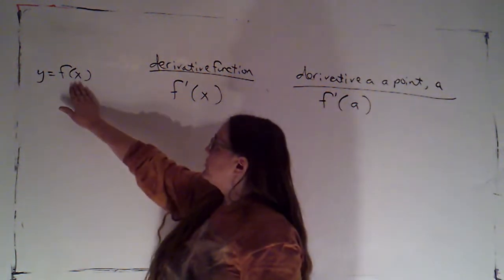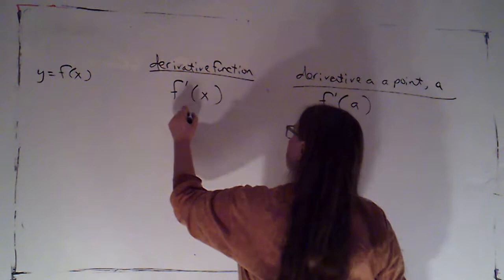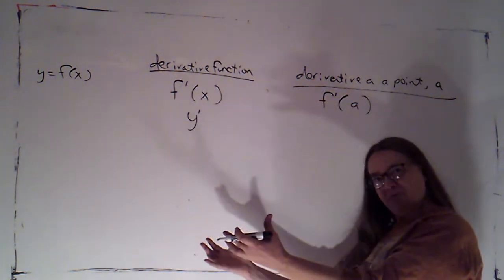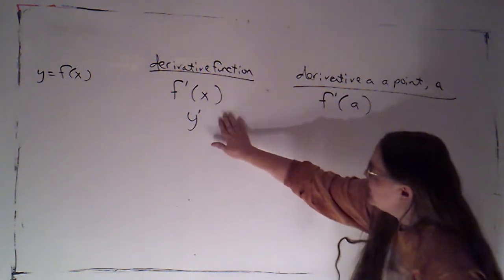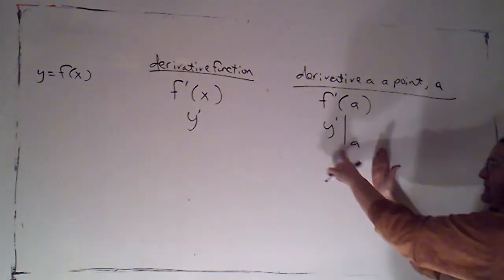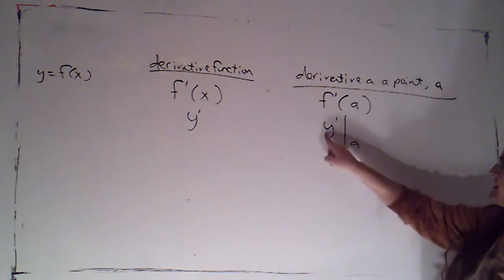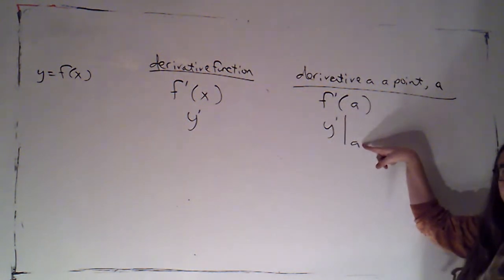Now since we can also call the function, instead of f of x, we can call it just y, we can call the derivative y prime. So we can take either name for the function and just attach a prime to it. This doesn't come with a place for the input. So if we want to evaluate that at a, we use this evaluation bar. That means this function evaluated at an input value of a.